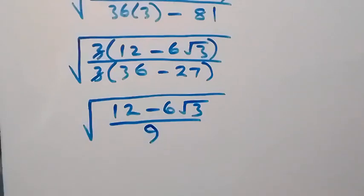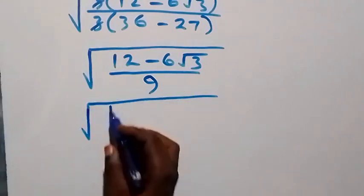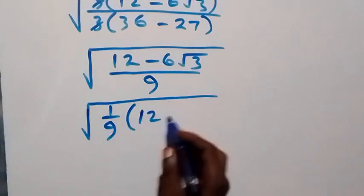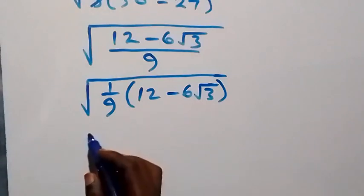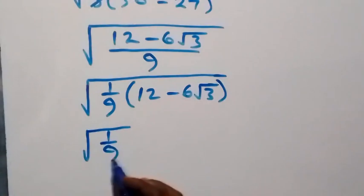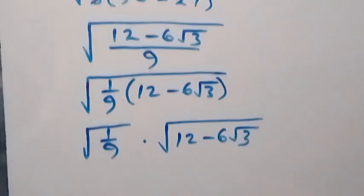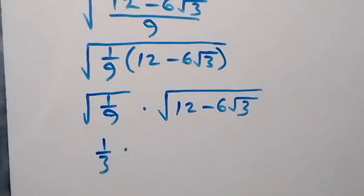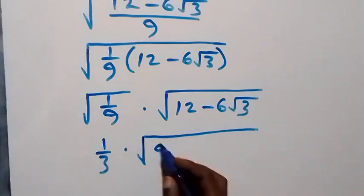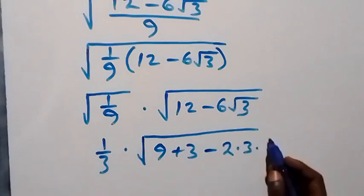From here we can write this again as square root of 1 over 9 multiplied by (12 minus 6 root 3). Since 1 over 9 is multiplying, we can separate this as root of 1 over 9 multiplied by root of (12 minus 6 root 3). Root 1 over 9 is 1 over 3. Then we can rewrite 12 minus 6 root 3 as 9 plus 3, same as 12, then minus 2 times 3 times root 3.